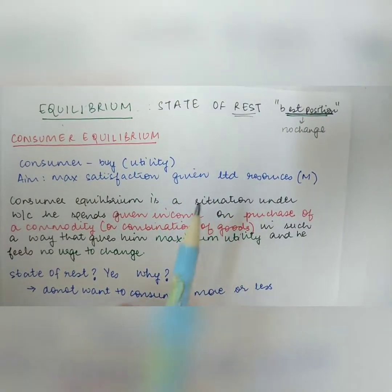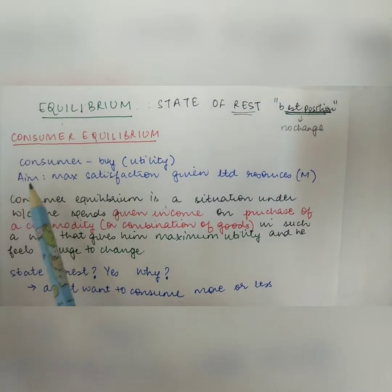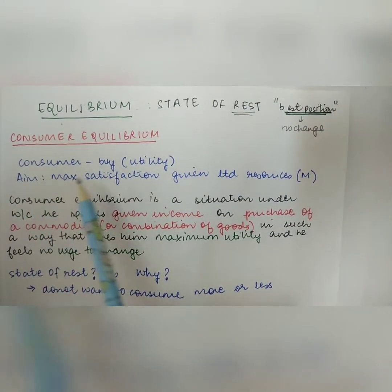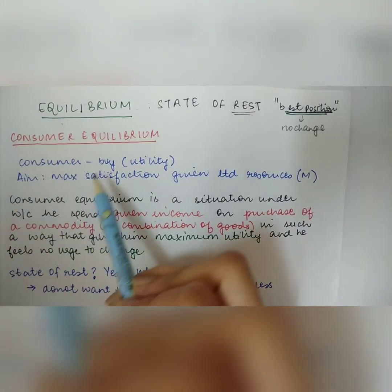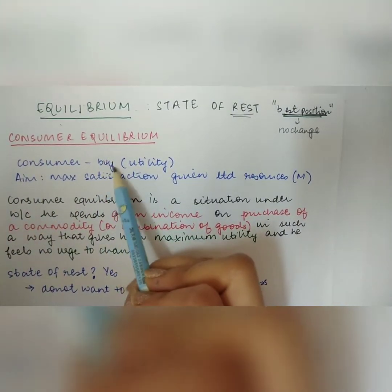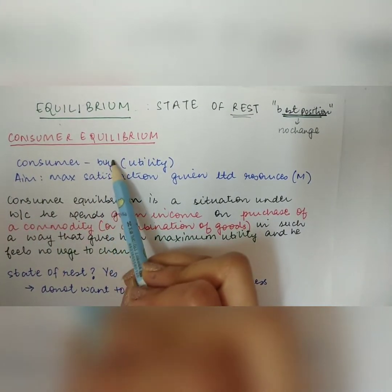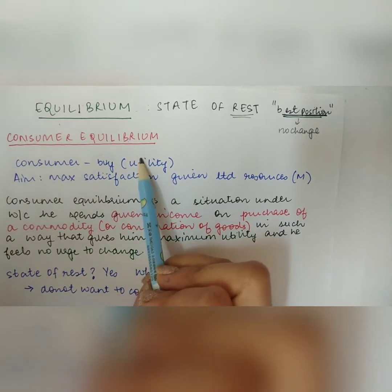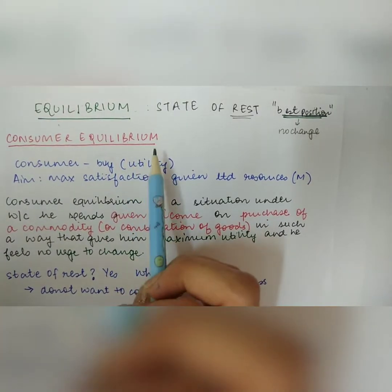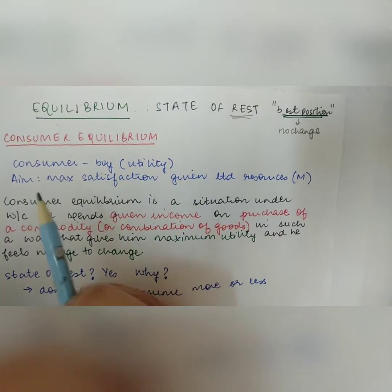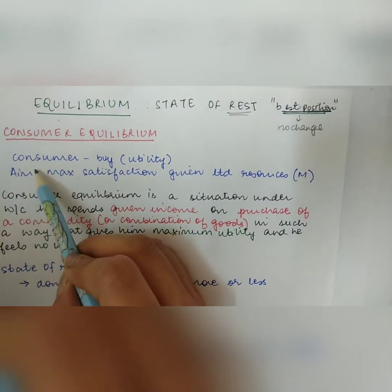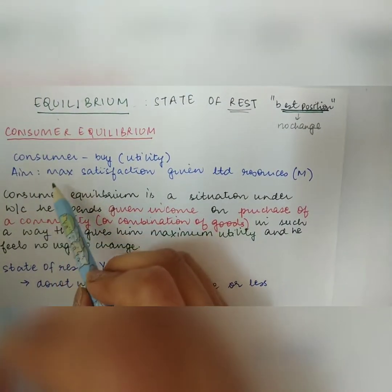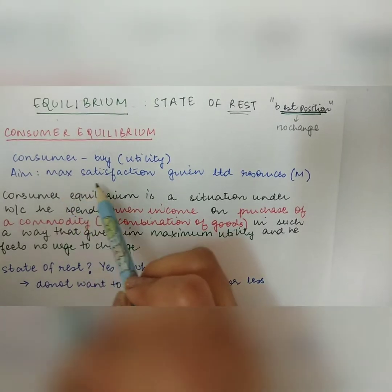It is the best position that you can achieve. When we talk about consumer equilibrium, let's take an example. There is a consumer who wants to buy a commodity. Why does he want to buy the commodity? Because he derives a certain amount of satisfaction from the consumption of the commodity. The aim of the consumer will be to maximize the satisfaction.